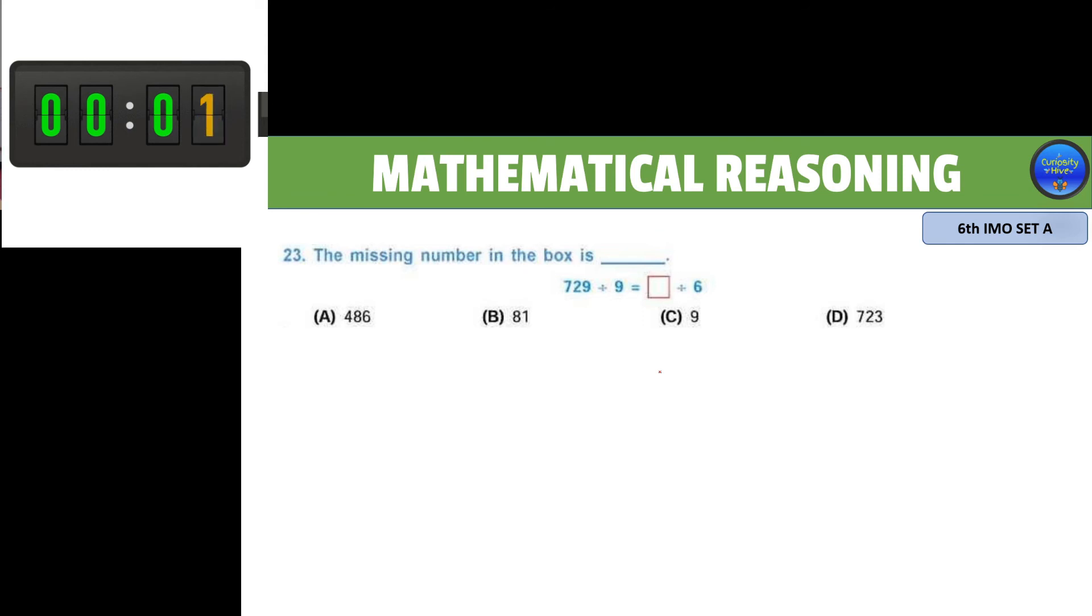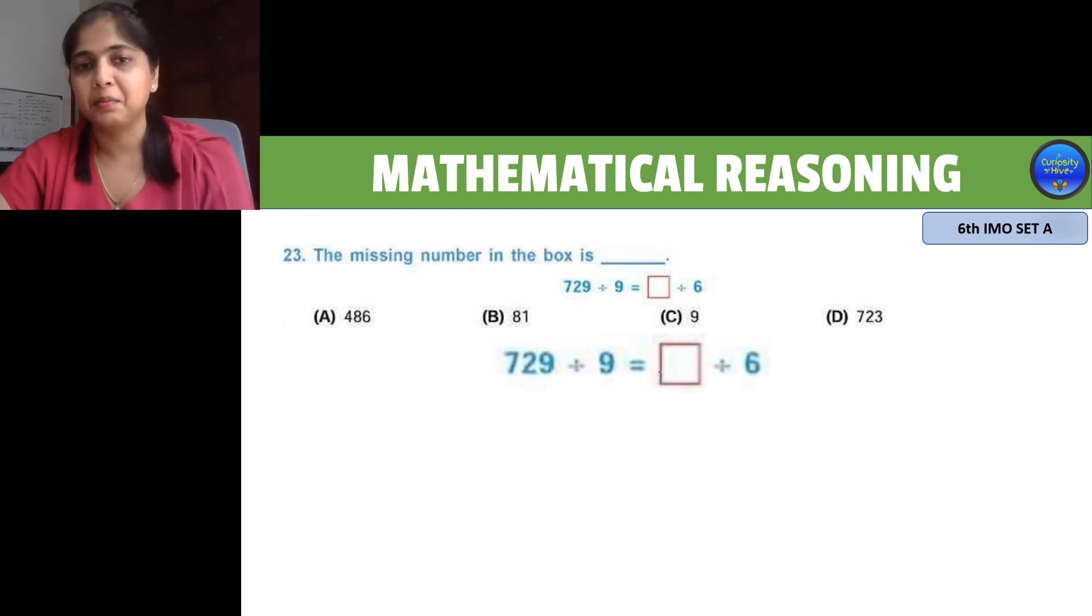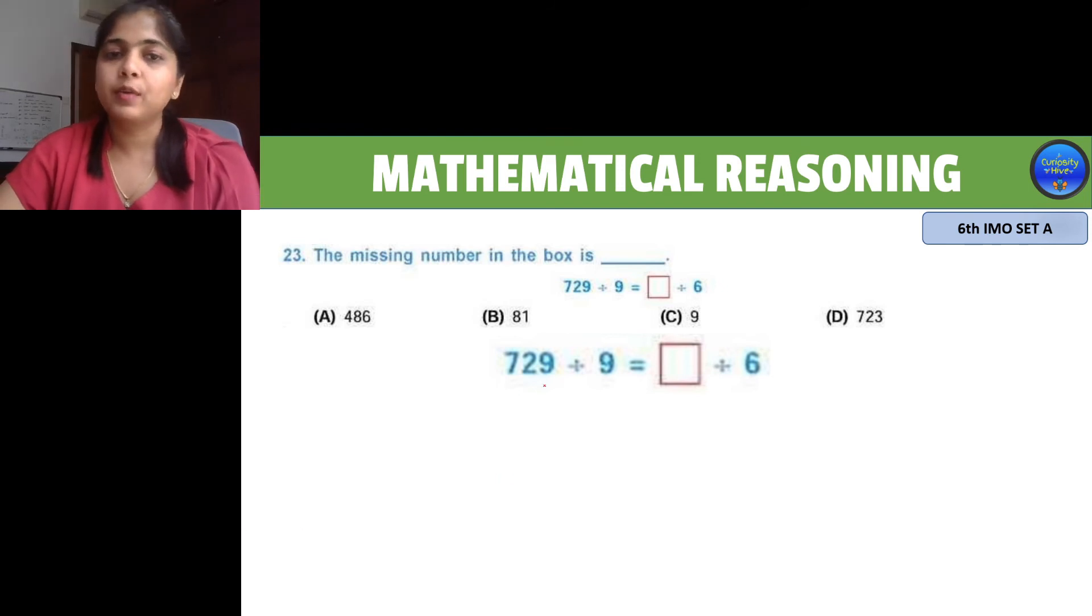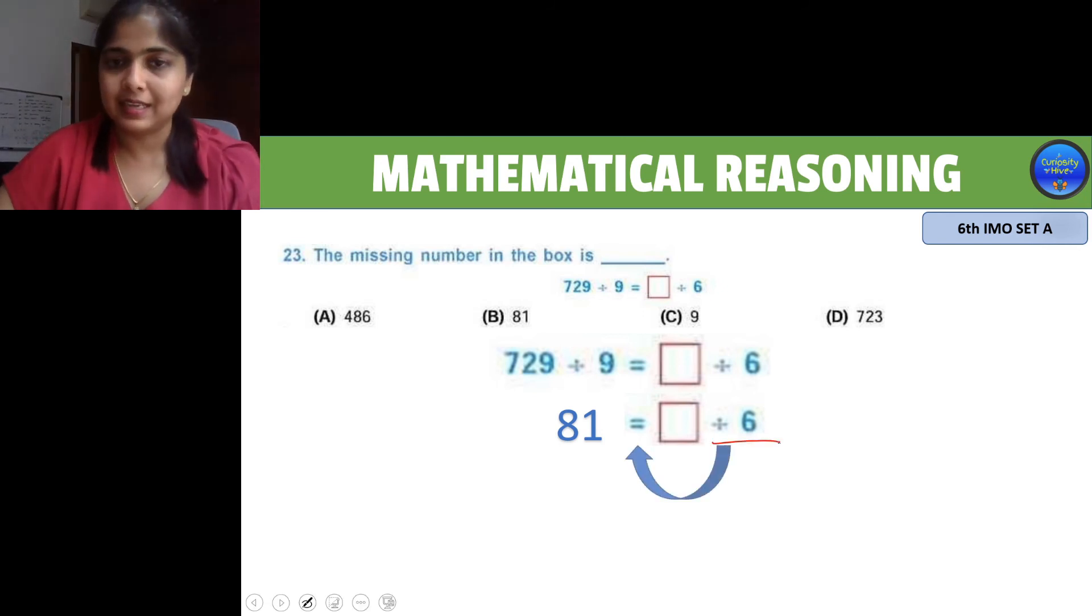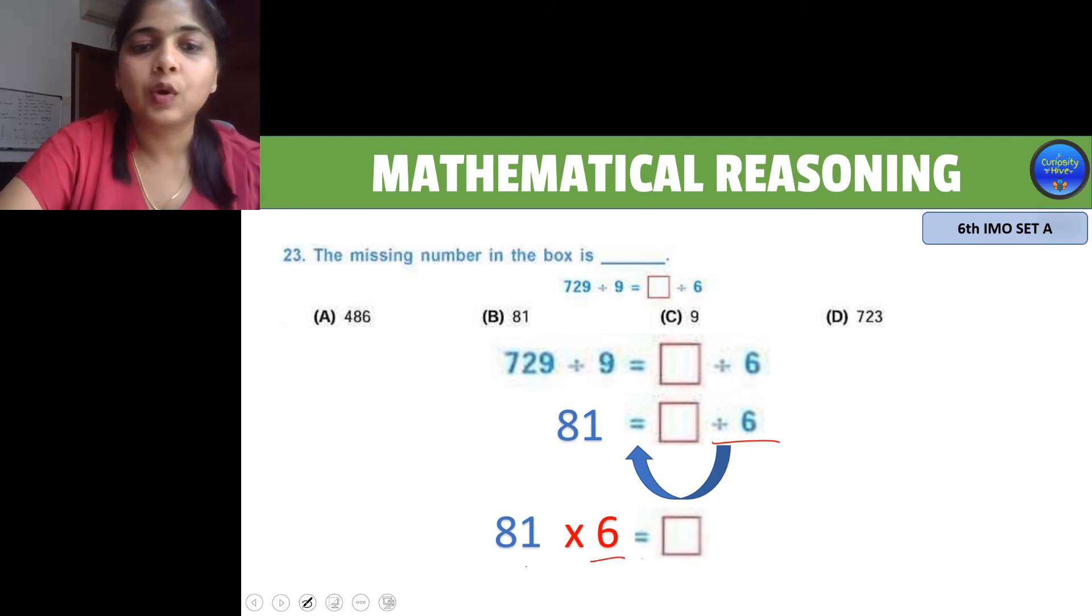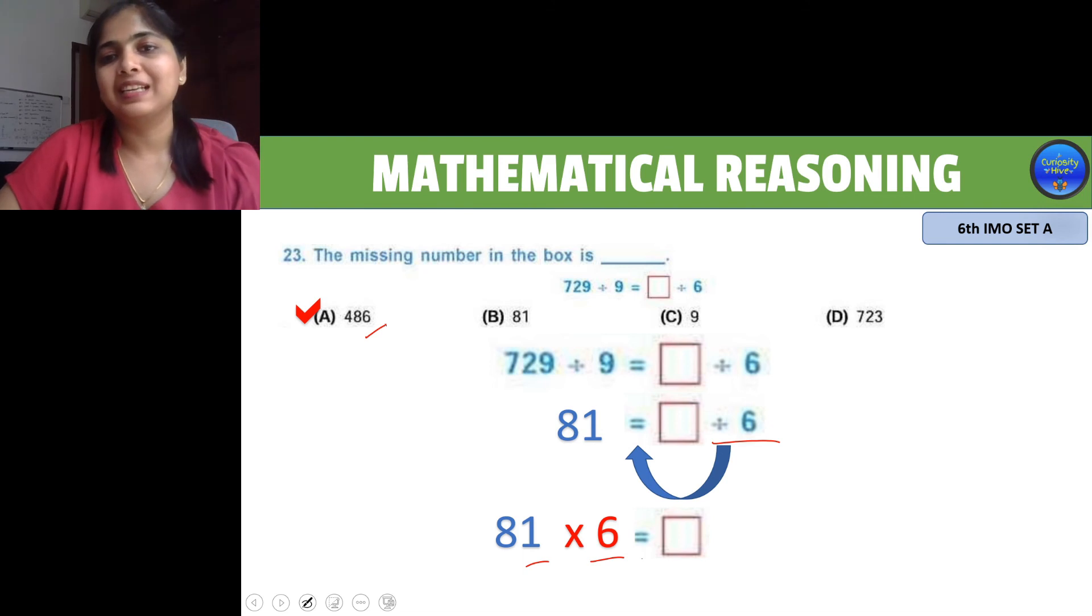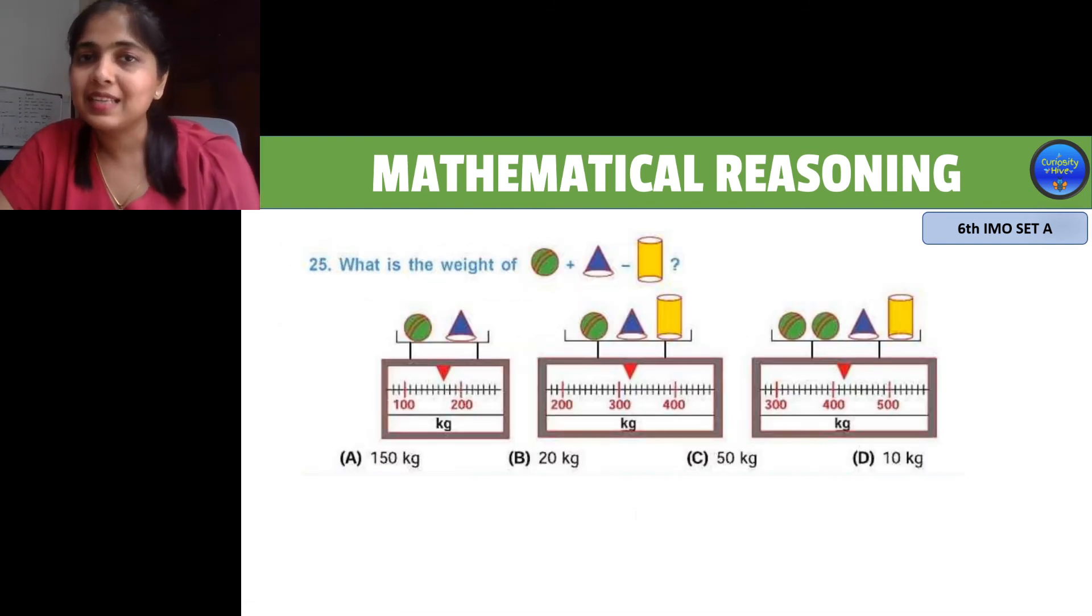Here again there is an equation and we need to find the missing number. Let's first solve the left-hand side. When you divide 729 by 9, you get 81, and that equals the unknown side. In the unknown side, let's move the divided by 6 to the other side, so it becomes multiply. So 81 times 6 is the unknown. Look at 6 and 1—the 1's place has to be 6. So your right answer would be 486.